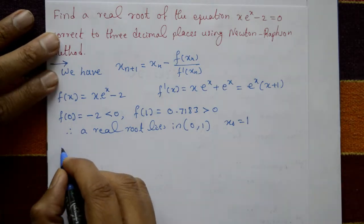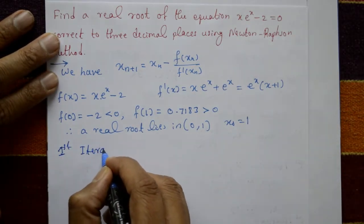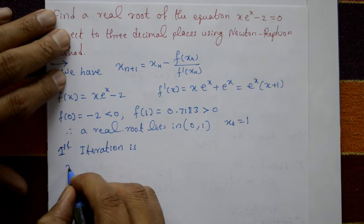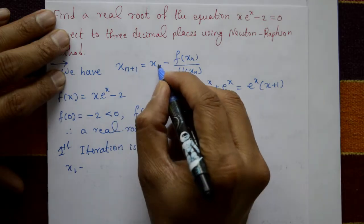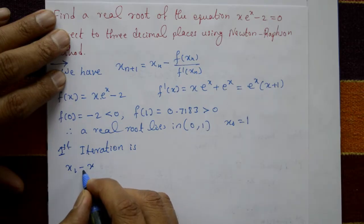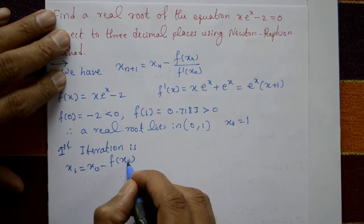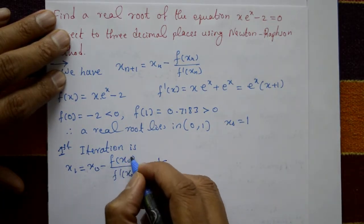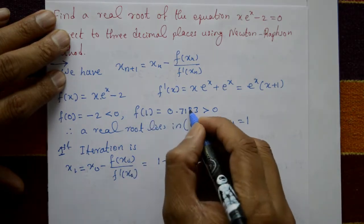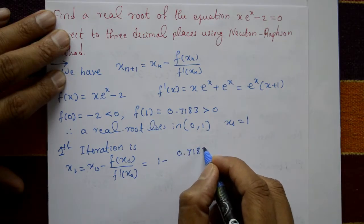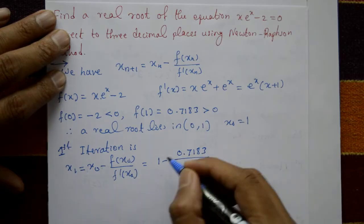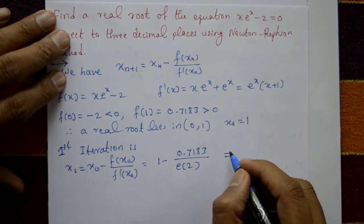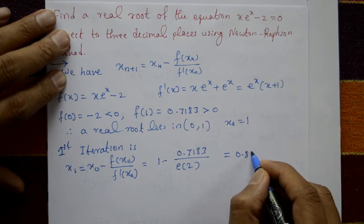First iteration: x₁ = x₀ minus f(x₀) / f'(x₀). With x₀ = 1: x₁ = 1 minus 0.7183 divided by f'(1) = e¹·(1+1) = 2·e, giving x₁ = 0.8679.